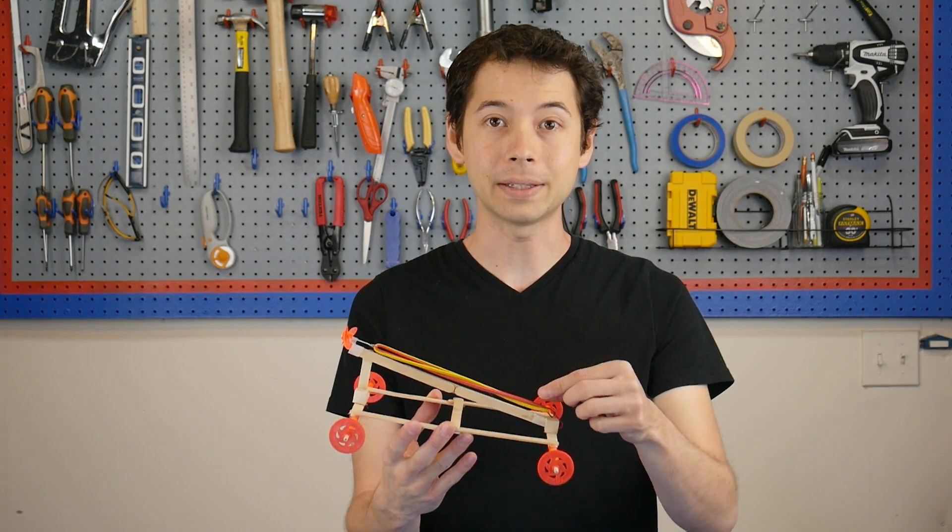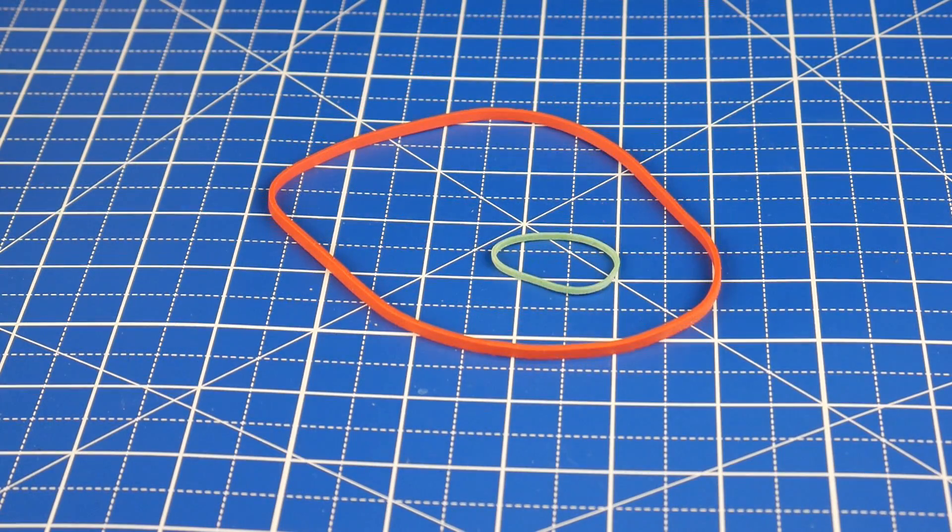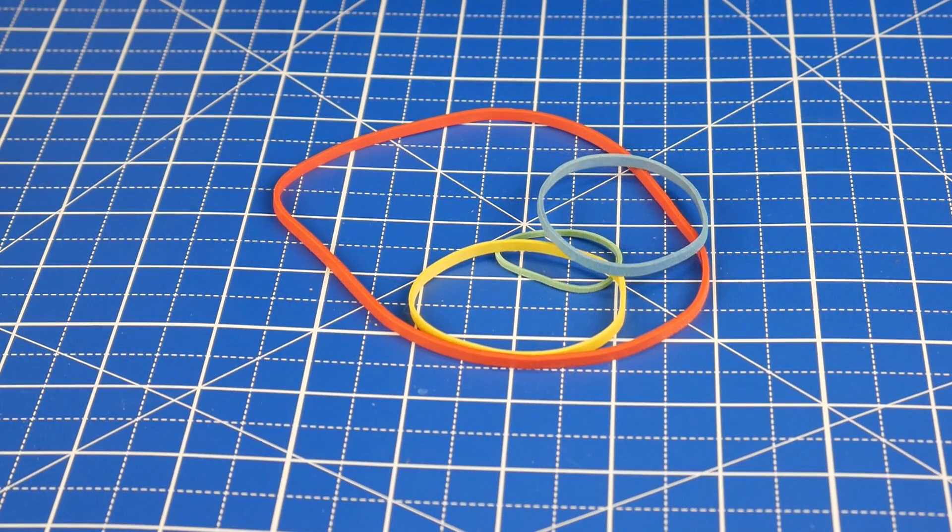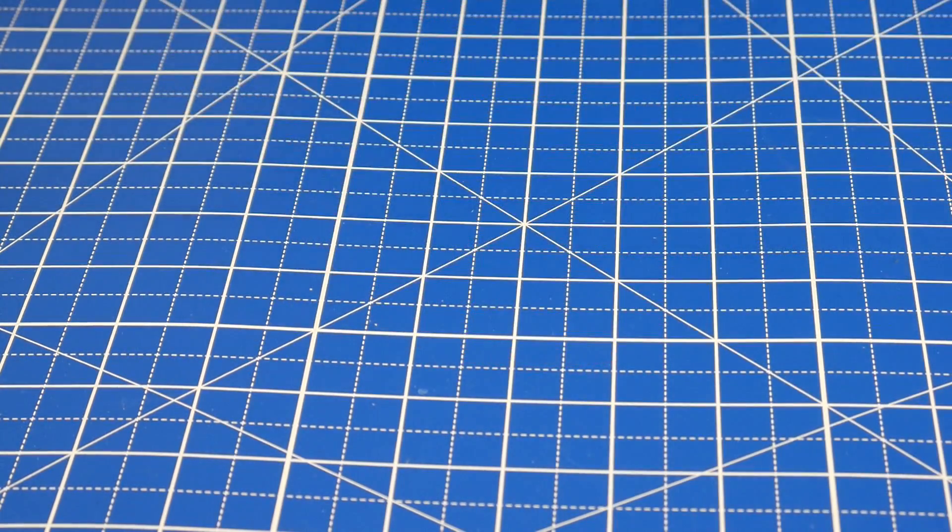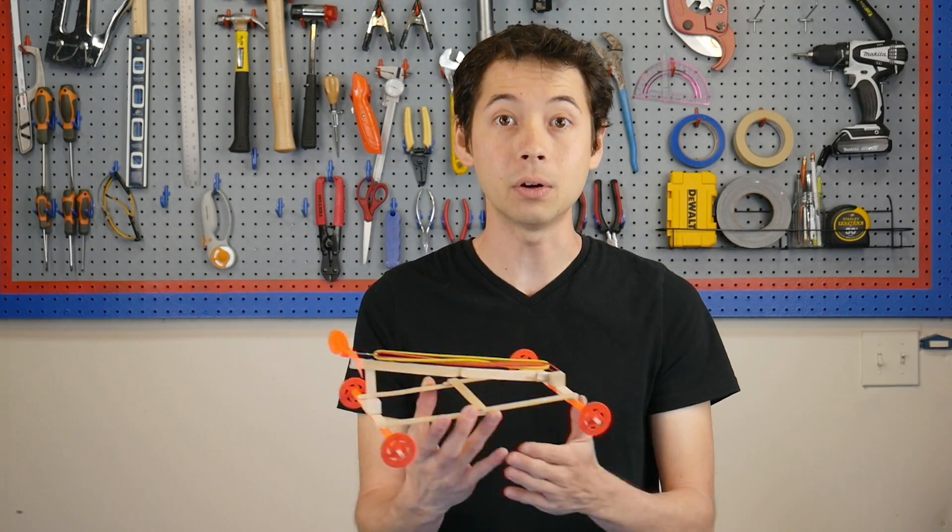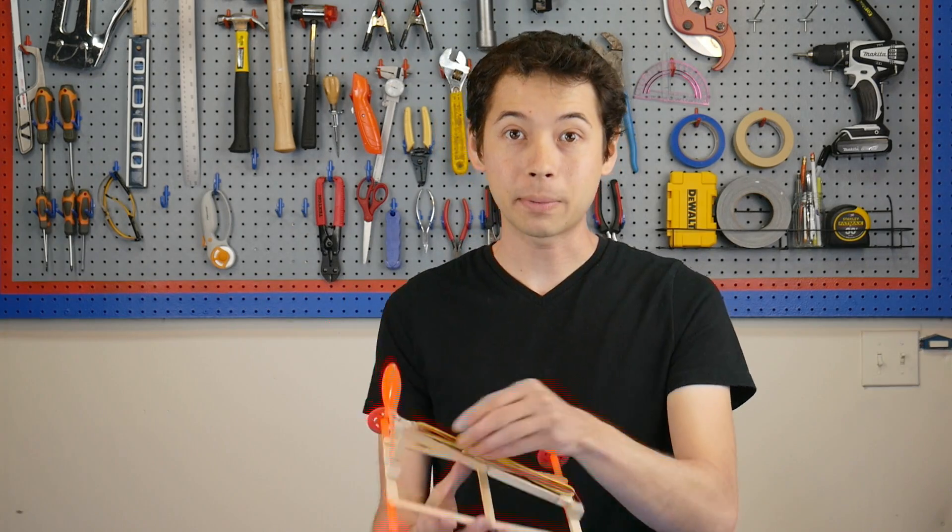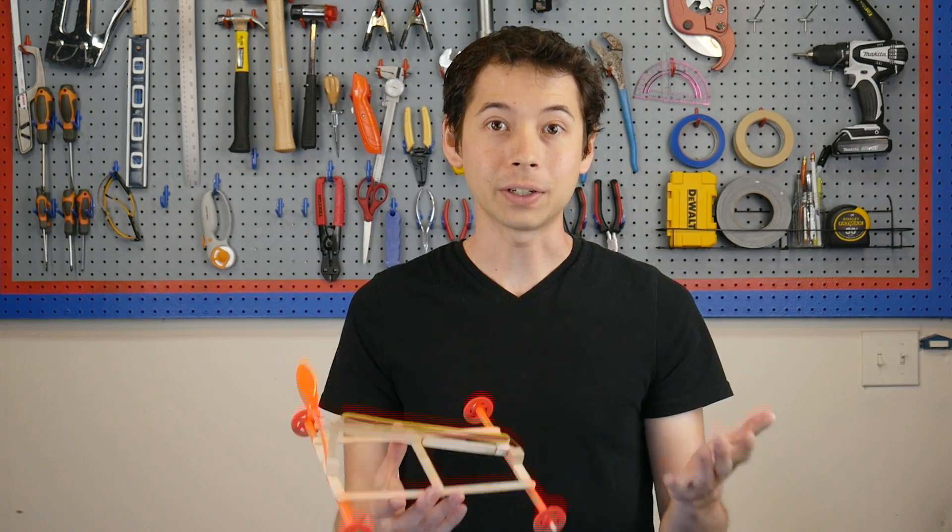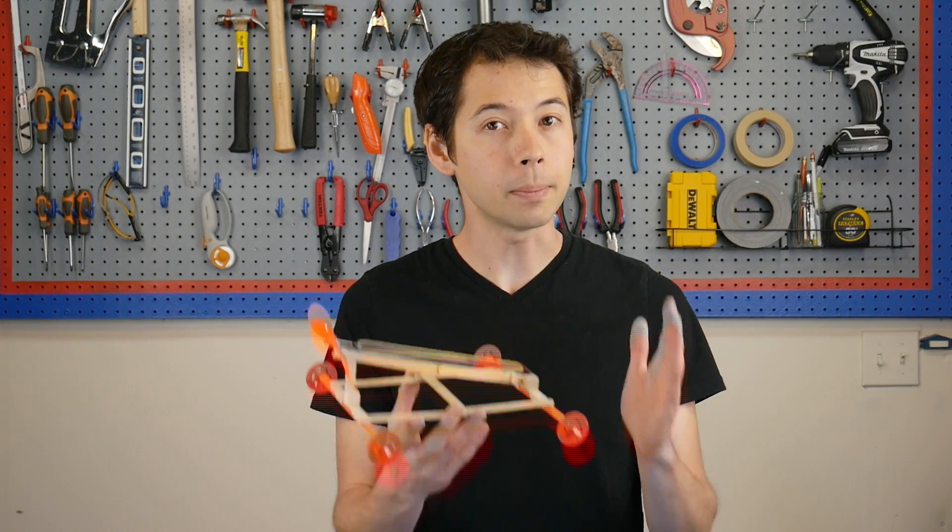The second variable is the rubber bands. The length, the thickness, and the number of rubber bands have a huge effect on how fast the propeller spins as well as how much force it generates over a given period of time. Now you might think that adding more rubber bands is going to make it go farther and faster, and that's true to a point.